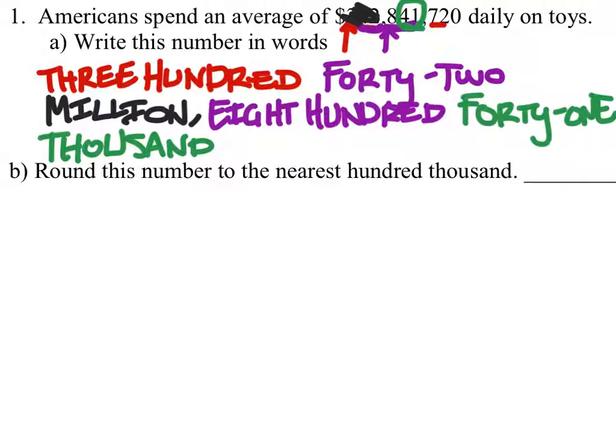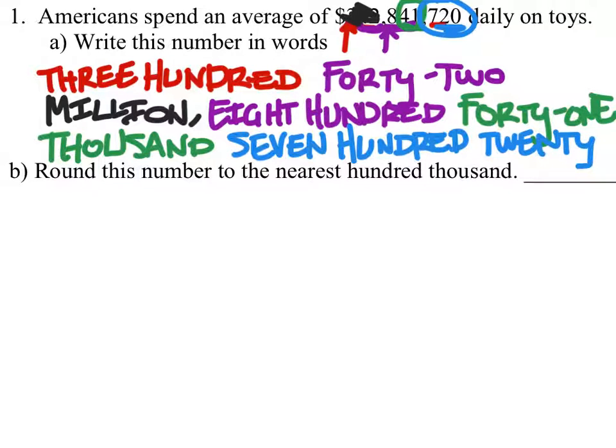And finally, we'll look at these last three numbers. These are not thousands or millions. They're just hundreds and tens, so that would be 700 from the 7 right there. And finally, the 20 right here. And there we go. That's it in words.